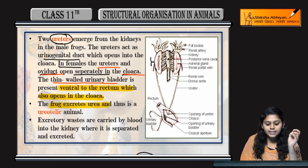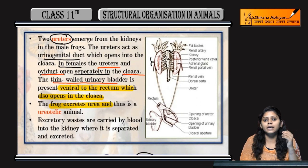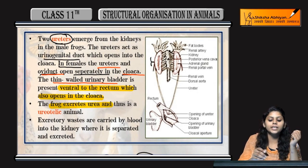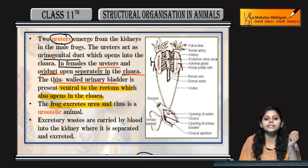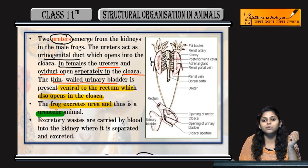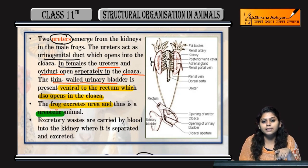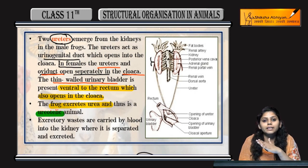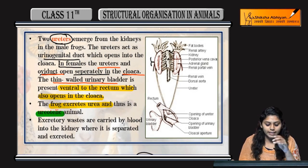Frog excrete kerti hai urea, isi liye frogs ko ureotelic animals bolenge. Cockroaches excrete kerti hai uric acid, isi liye unhe uricotelic bolte hai. Frogs are ureotelic animals.